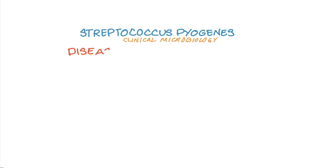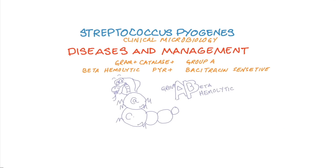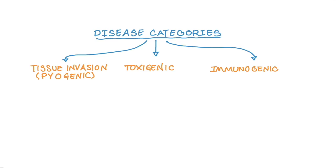Diseases caused by Streptococcus pyogenes can be divided into three main categories: diseases caused by the bacteria directly invading tissue and causing damage; diseases caused by the exotoxin produced by Streptococcus pyogenes; or diseases caused by the immune response of our body, which in turn causes damage to the body.